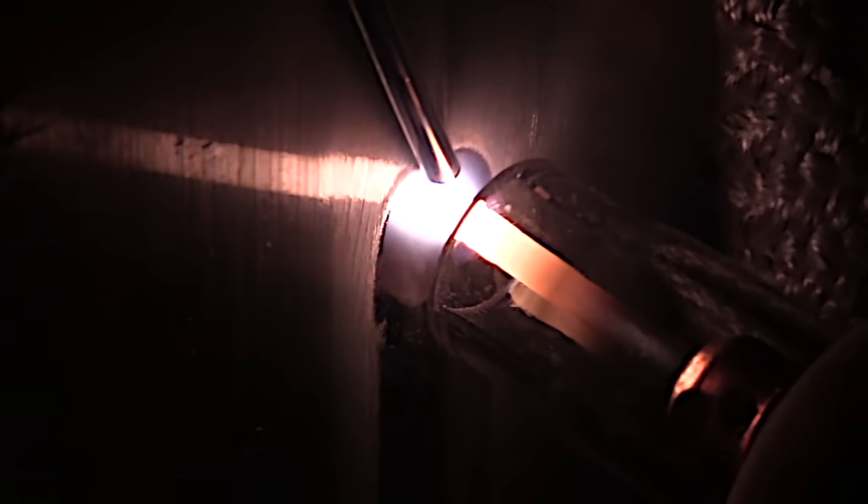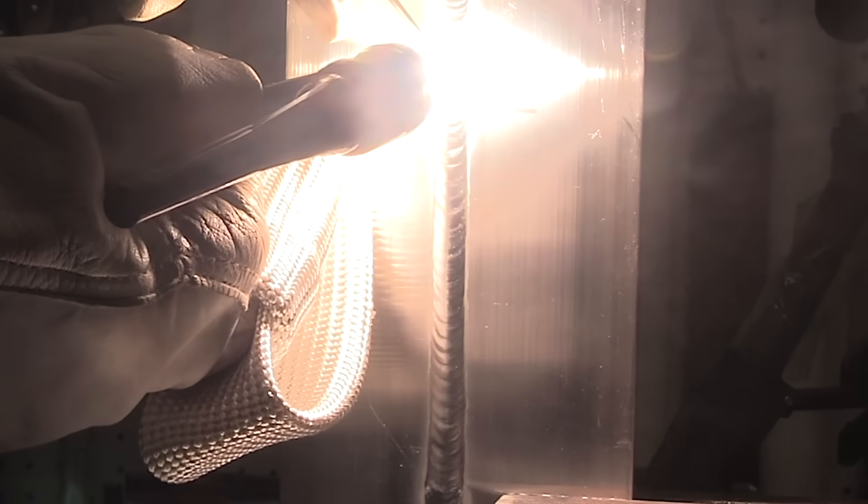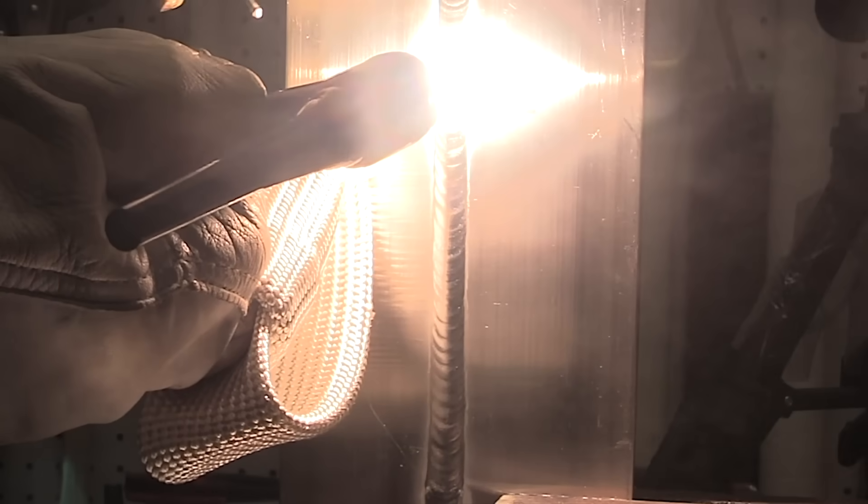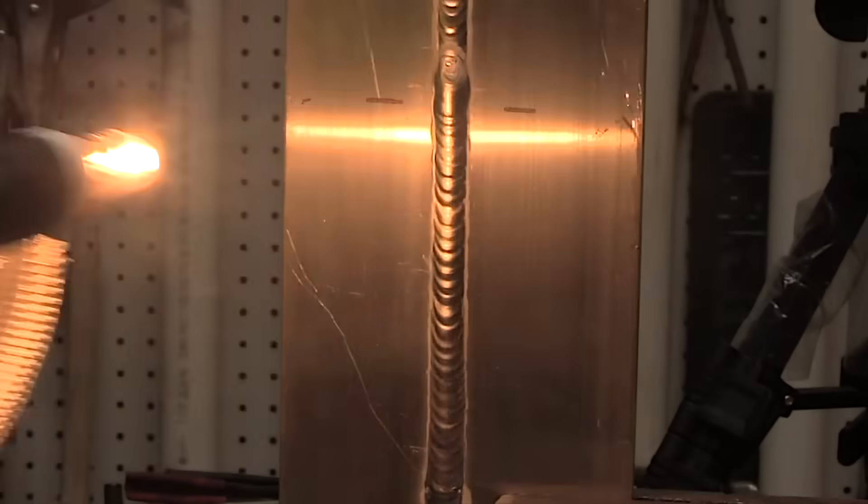My arc length is about the diameter of the electrode and again, you can kind of see me swirl the arc around as I taper amperage to avoid leaving that crater crack.